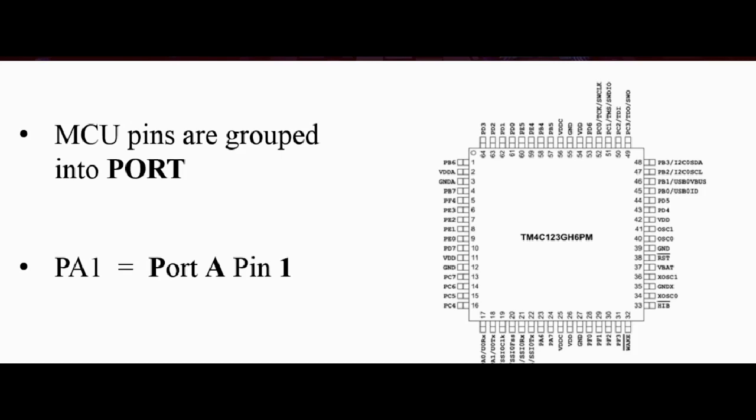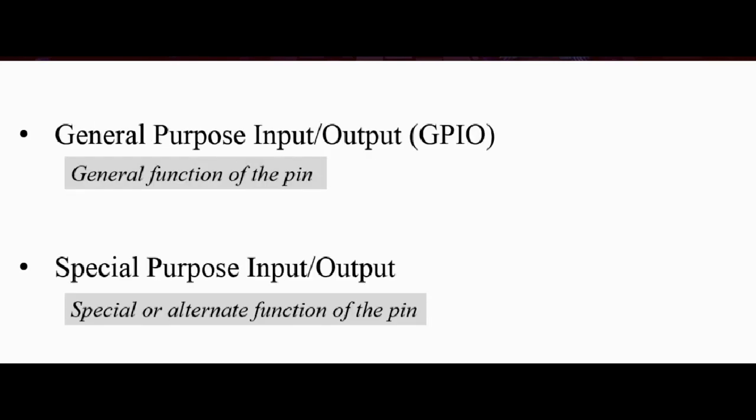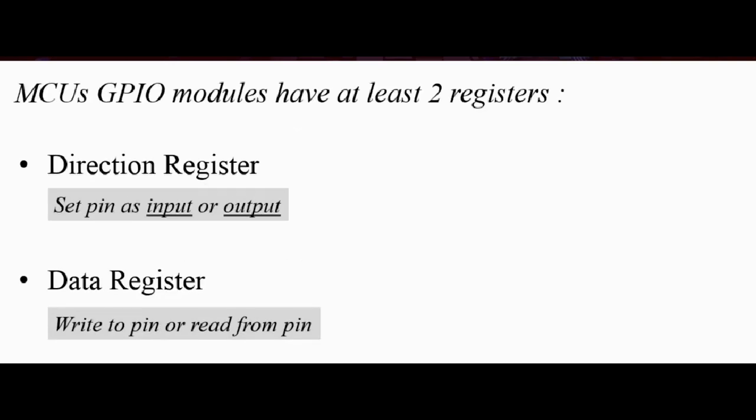And general purpose input output, those same pins have special purpose or alternate functions. And we can call these alternate functions as their special purpose. And also all MCU GPIO modules have at least two registers, the direction register and the data register. The direction register is for setting the direction, whether the pin should be input or output. And the data register is where the data is. So we can read the data from this register or we can place the data inside this register.